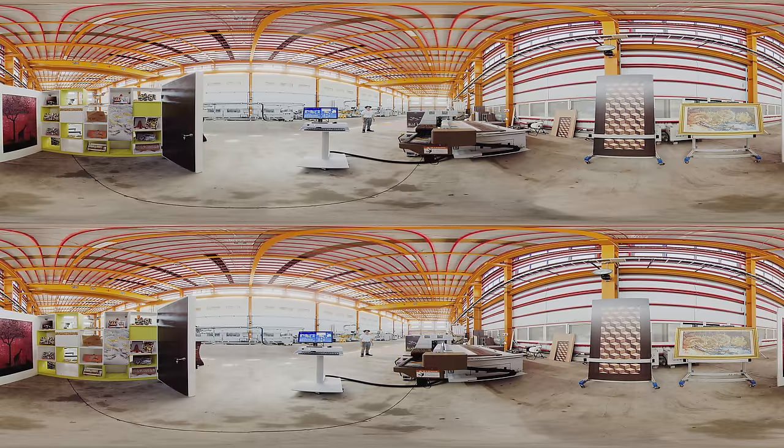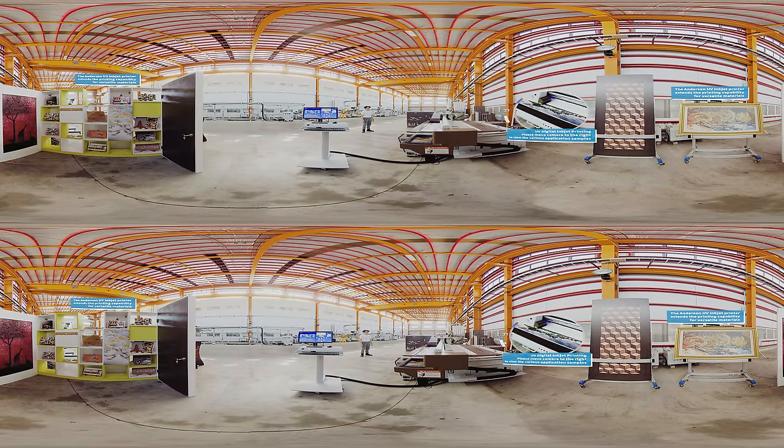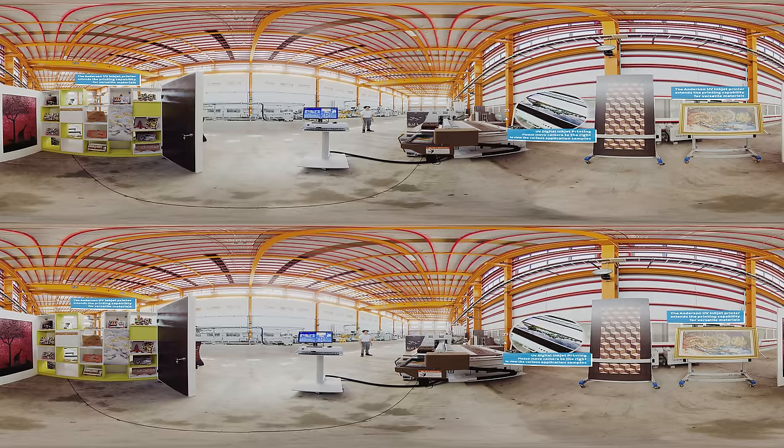Anderson has been working on UV inkjet printers for many years. This type of printer can print on cabinet door panels, acrylic, and glass, providing direct solutions to the market's small batch, diverse, and personalized needs.